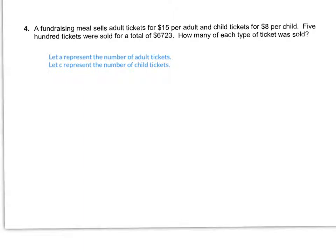I'm looking at a couple of totals here. We have a total of $6,723 as a money amount, and we also have 500 tickets in total being sold. We know all together there were 500 tickets sold, so the number of adult tickets plus the number of children's tickets has to total 500. So: A + C = 500.